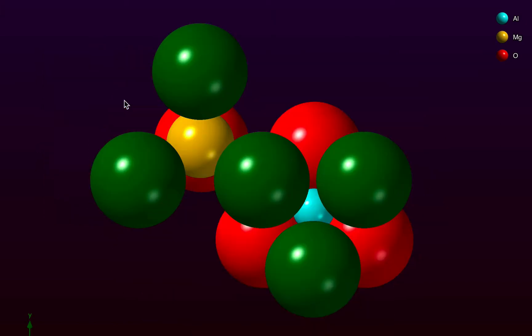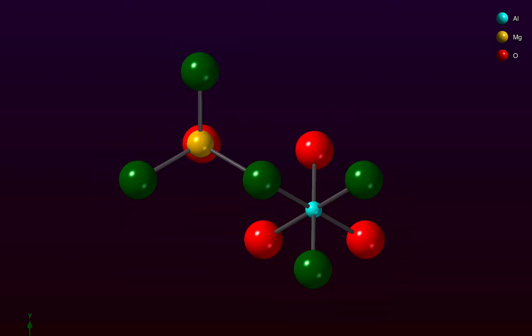And now we have the atoms shown for the coordination groups. Now if we go back to a ball and stick model then we can see the groups of atoms around magnesium and aluminium.